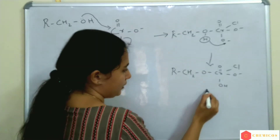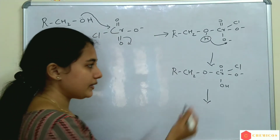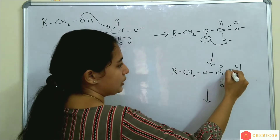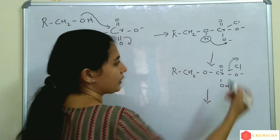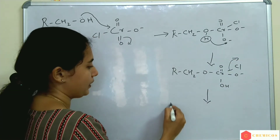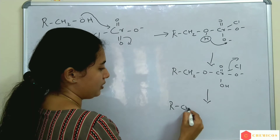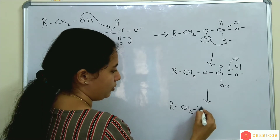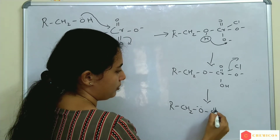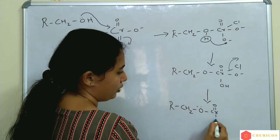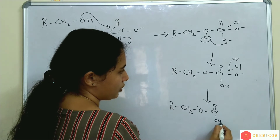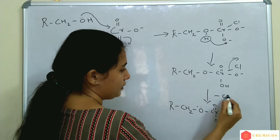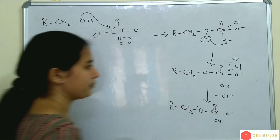Now what happens? Cl is the best leaving group, so Cl will leave as Cl⁻. We get R-CH₂-O, Cr double bond O, OH, and O⁻. Cl⁻ is released.